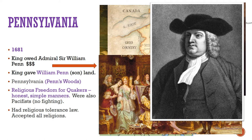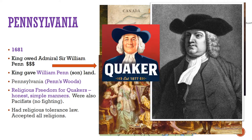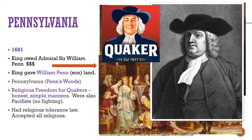William Penn was a Quaker, a type of Christian, and he wanted to create a safe place for other Quakers to settle and worship God the way that they thought was right. Quakers dressed in plain clothes and covered their heads with hats as a symbol of being under God's authority, which is why the Quaker Oats guy looks a lot like William Penn. Go ahead and draw a Quaker next to your notes on Pennsylvania.